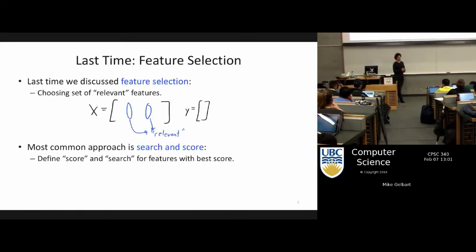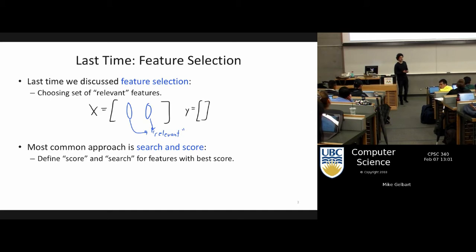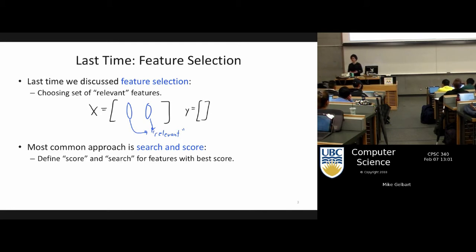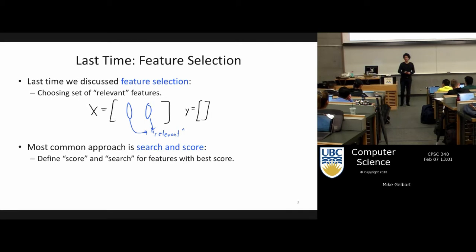Last time we talked about feature selection, which is this slightly ill-defined task of given my columns, my features, can I decide which ones are somehow relevant or useful or the right features for what I'm trying to do, which indeed depends on what you're trying to do. At the very end we talked about search and score and the L0 norm and this idea of not being able to try all possible subsets of features.